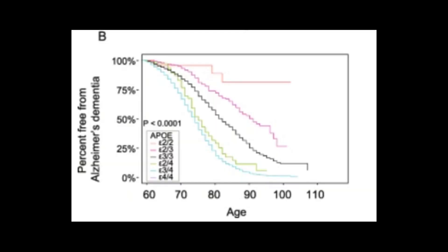Looking at data from people aged 60 to 110, the y-axis shows the percentage free from Alzheimer's disease. People with the APOE2-2 genotype — meaning a copy from both parents, which is very rare at around 5% — show that even at 110 years old, roughly 80 to 90 percent are free from Alzheimer's. By contrast, people with the APOE4 genotype show that even around 80 to 90 years of age, only about 25% are free from Alzheimer's disease.